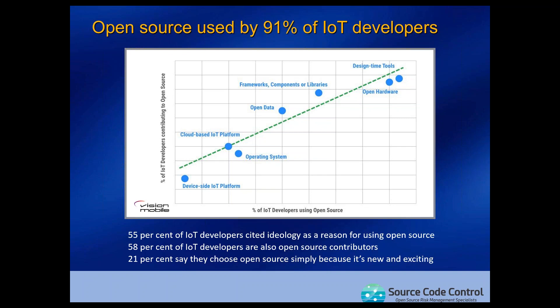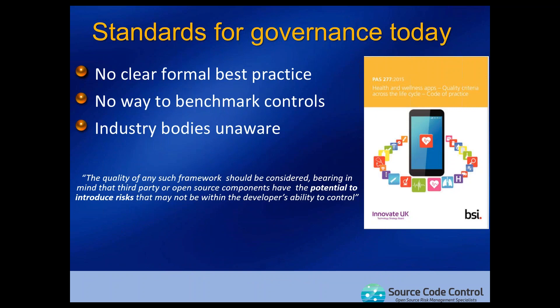I've pulled out some quotes of reasons developers give for using open source software in their development. Notably, 55% of IoT developers cite ideology as a reason. Now, I don't doubt for a minute that the decision to use open source for IoT is the right decision. However, as we go through this presentation, I'm going to focus on some of the business risks — and it's very clear that outside of software developments, more senior managers need to play an active role in decision processes around the adoption of open source.